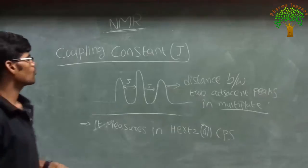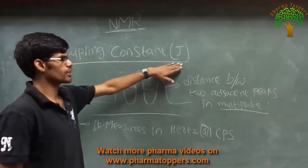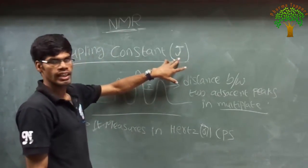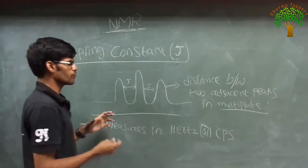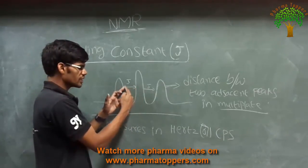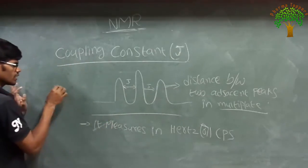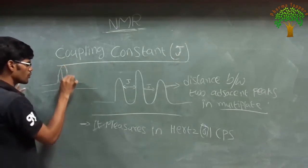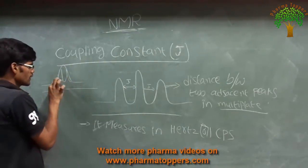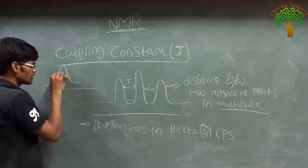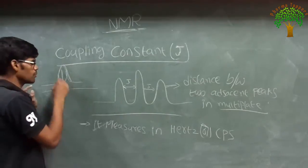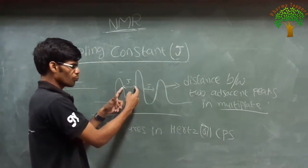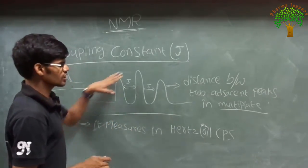This is the concept about spin-spin splitting. Now we are going to discuss about the coupling constant. The coupling constant is represented by the value J. This is important — the coupling constant is denoted by the letter J. The coupling constant means the distance between two peaks in a multiplet. The distance between two peaks in a multiplet is called the coupling constant, and it is represented by the value J.